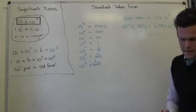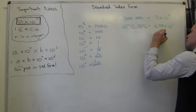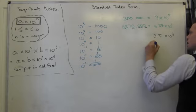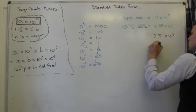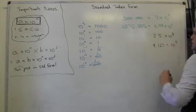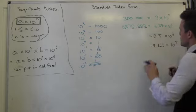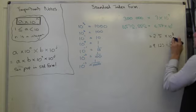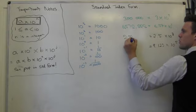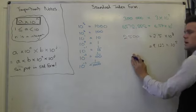If I go from index form back into real numbers — let's say I had 2.5 times 10 to the 3 — it's pretty easy to put back into normal numbers. I'm just going to times by 10, 3 times, or times by a thousand. So I had 2.5: hop the decimal 1, 2, 3 — and I fill in zeros. And there's my answer: 2500.